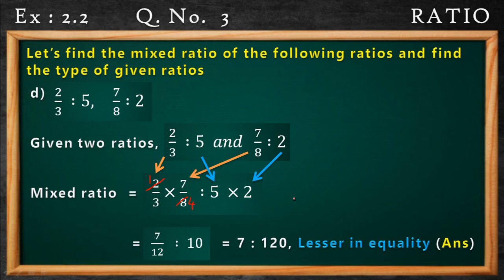We can remove the fraction part by doing cross multiplication. So cross multiplication can be done in terms of ratios. If you multiply 12 into 10, it will become 120 and we move to the right side. And 7 — there is nothing in the denominator, so assume 1 — so 7 into 1 will become 7. So 7 into 120 is the final answer. Now since 7 is less than 120, this is lesser inequality.